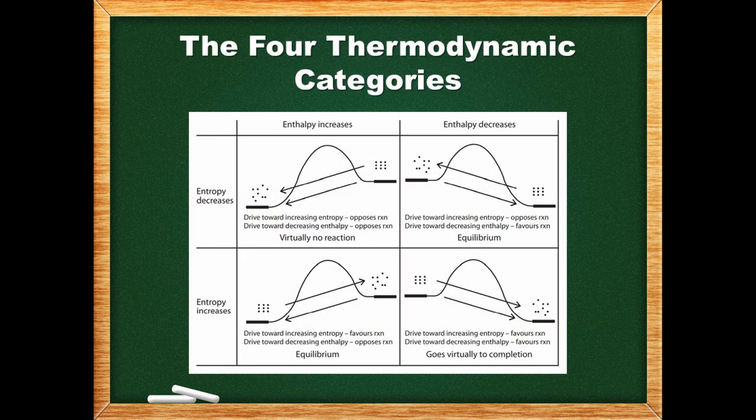The diagram here illustrates the four possible enthalpy-entropy combinations that could occur in a chemical reaction. Remember that when the drives towards enthalpy and entropy are in opposition, equilibrium is established. If they both favor the reaction, then it goes virtually to completion, while if they both oppose the reaction, then there is virtually no reaction.